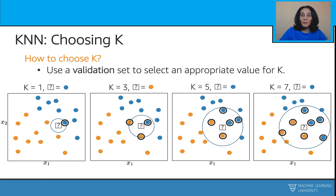Different choices of k may lead to different class predictions. When k equals 1, the class label of our question mark data point is blue. When k equals 3, as we saw, the predicted class is orange. Whereas when we switch to k equals 5 or k equals 7, we see that the blues dominate the neighborhood voting, so the predicted class is blue.